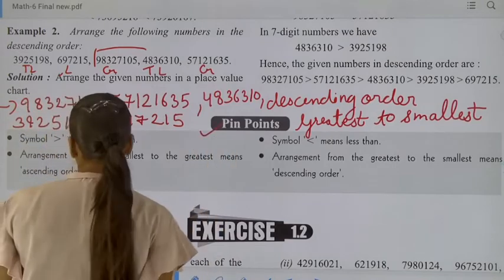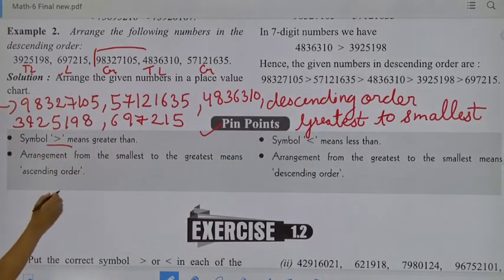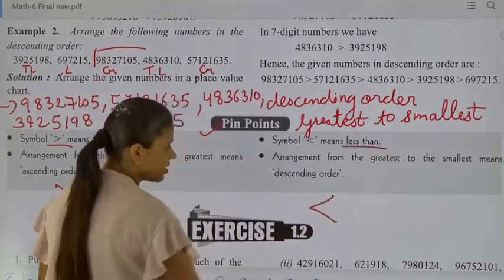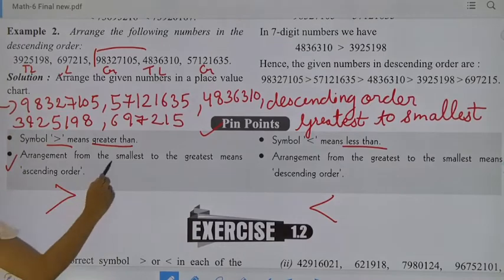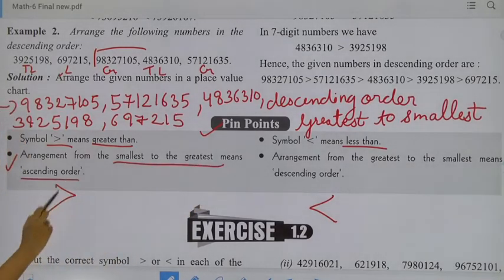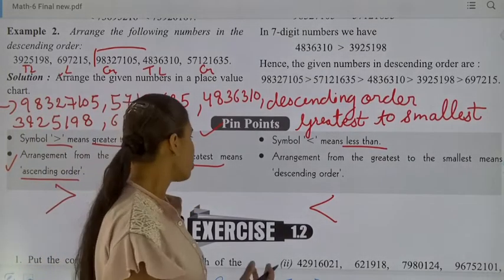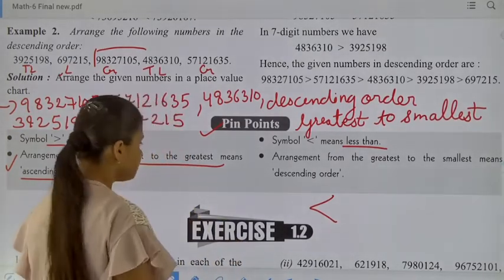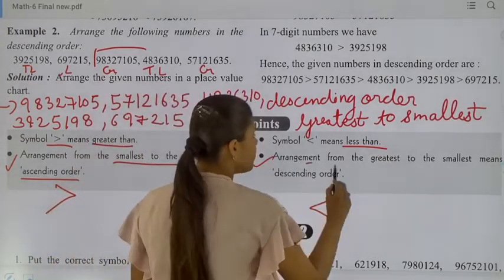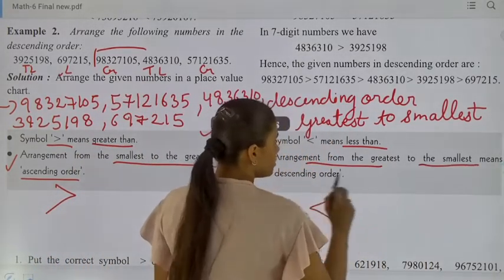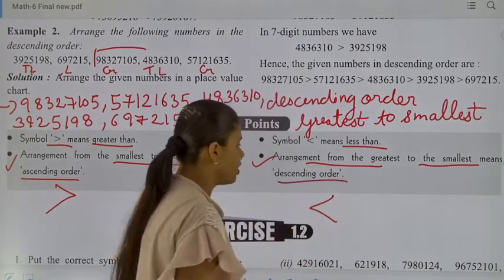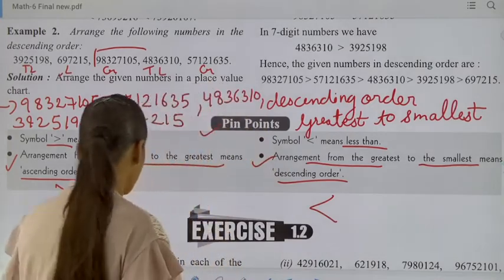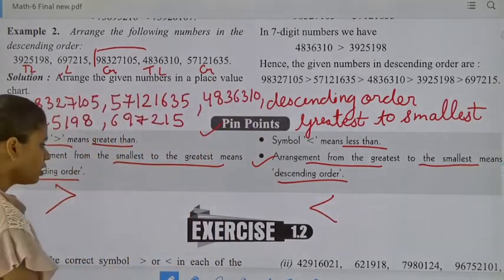Now, some pinpoints. The symbol '>' is for greater than and the symbol '<' is for less than. Arrangement from smallest to greatest means ascending order — as I told you, ascending order means smallest to greatest. Arrangement from greatest to smallest means descending order — descending order means greatest to smallest. Now move to exercise 1.2.